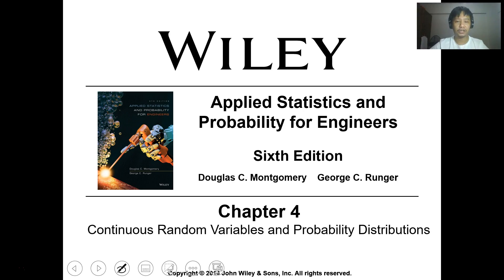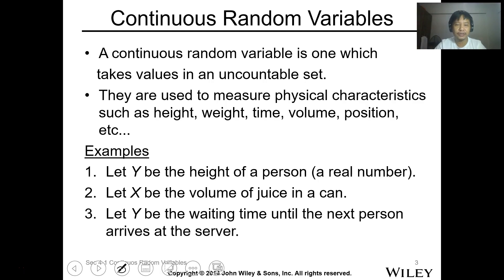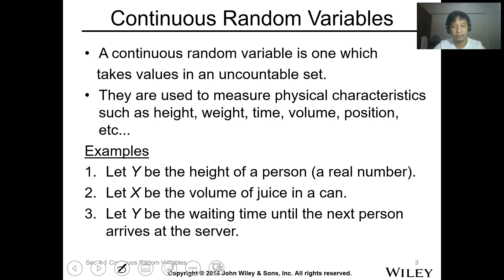As we discussed in the previous lesson, continuous random variables are random variables where there is an interval, and within that interval there is an infinite set of outcomes or values that you can identify — they are uncountable. They are used to measure physical characteristics such as height, weight, time, volume, position, etc. Basically, height or weight or time can have infinite values. For example, if the height is between 5 meters to 6 meters, there are infinite values in that range.